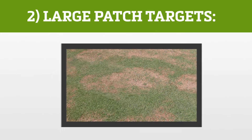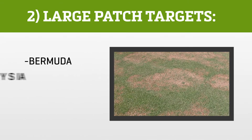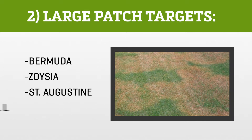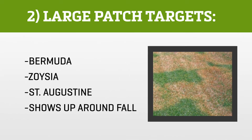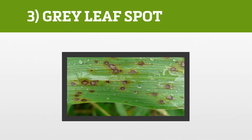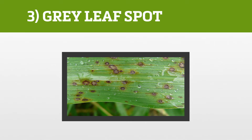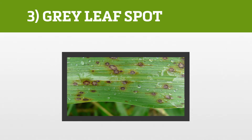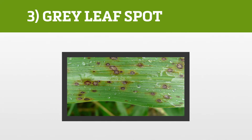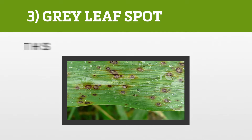Large patch is the next culprit. It is most pervasive on warm season grasses like bermuda, zoysia, and St. Augustine, but typically it does not show up until fall.